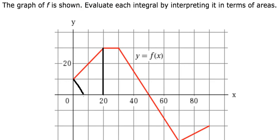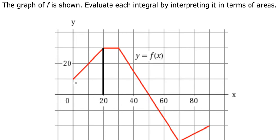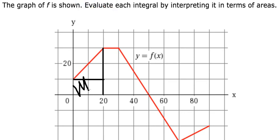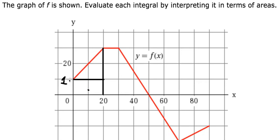So we need to find the area of this region. When we calculate this area, we can divide it into two figures. The first one is a rectangle and the second one is a triangle. For the rectangle, we have 20 multiplied by 10, because we have the length multiplied by the width, giving us 200.